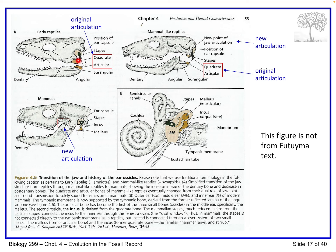Looking up at the earlier forms: in an early reptile, we can see the quadrate and the articular - that was the original jaw joint. The stapes was there too. These three bones did interact with each other to help produce sound, so they played a role in hearing, but not like they do in modern mammals. Later on, in a mammal-like reptile, we see the quadrate and the articular have been reduced in size - they're in the process of becoming what we see in the middle ear of a modern mammal.